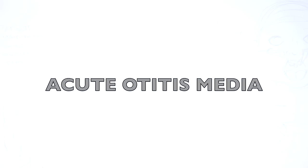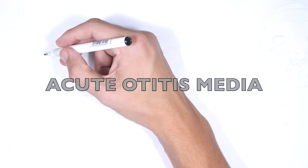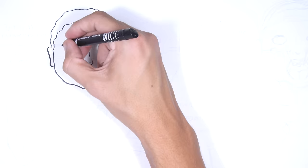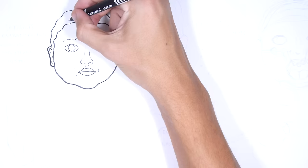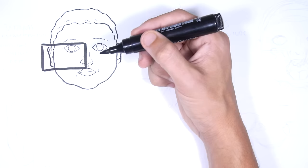In this video, we're going to talk about acute otitis media, derived from the Greek word ot, which means ear, itis, which means inflammation, and from Latin media, which is something pertaining to the middle. Acute otitis media is infection of the middle ear, and it is a very common problem in children.